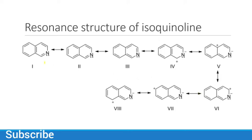If we talk about the resonance structure of isoquinoline, it has a total of eight structures. Looking at them one by one: in the first structure we see three double bonds in the benzene ring. The first bond shifts towards the benzene ring, giving us three double bonds in benzene and two double bonds in pyridine. In structure three, we have three double bonds in the pyridine ring but two double bonds in the benzene ring.